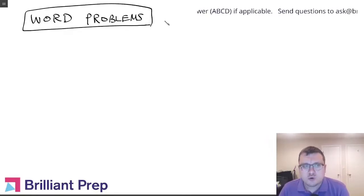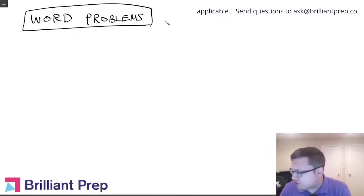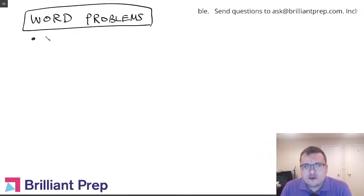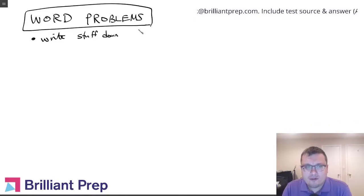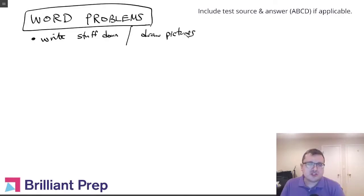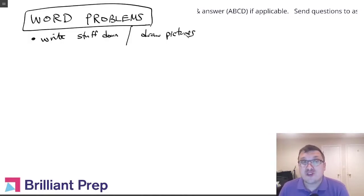First things first: write stuff down or draw pictures. A lot of times students try to do too much in their head. They're very bright, I'm sure they can do a lot in their head, but for this test, if you're going for a top score and you're only 95% accurate in your head, that won't be enough to keep you from maybe a 1500 in many cases.